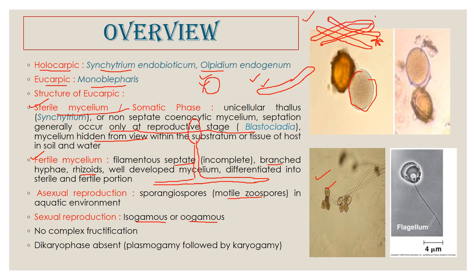Their fructification is very simple — they do not have complex fructification like the Ascomycetes or Basidiomycetes, which have complex structures like toadstools, mushrooms, and polypores. The reproductive stages in class Chytridiomycetes are very simple, and that is one characteristic of lower fungi. After the fusion of the gametes — after plasmogamy — karyogamy is immediately followed, and after karyogamy meiosis follows immediately.